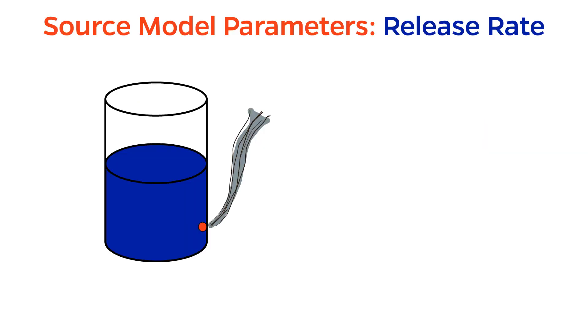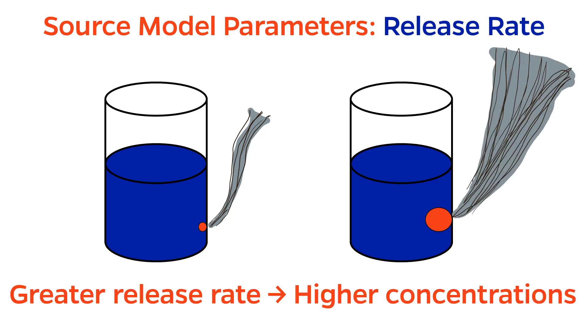To get you started, the most obvious parameter is the quantity or release rate of the material. Clearly, the more chemical that is released, the higher the concentration will be. What other parameters?